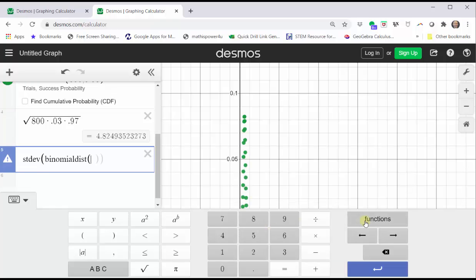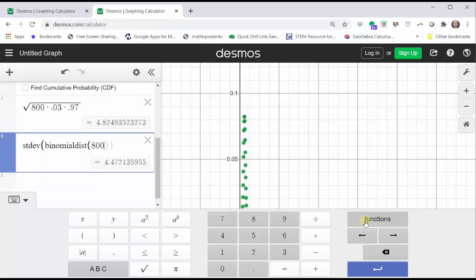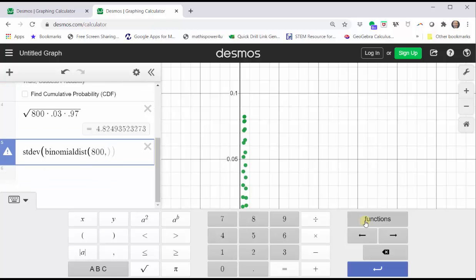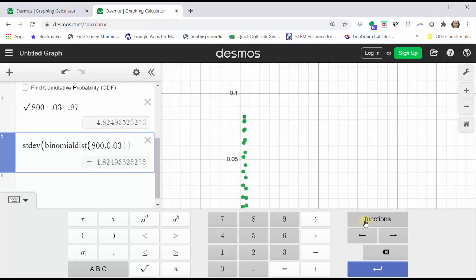And once again, enter the number of trials, which is 800, comma, the probability of the genetic mutation as a decimal, which is 0.03. And notice how we get the same result. Approximately 4.825 to three decimal places.